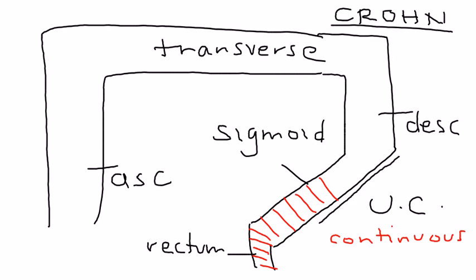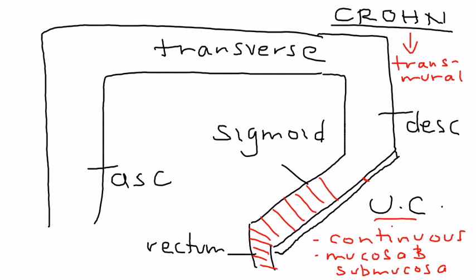Another key difference involves the bowel wall. In ulcerative colitis the inflammation is limited to the mucosa and submucosa, whereas in Crohn's disease it involves the full thickness of the wall - that's known as transmural inflammation. With ulcerative colitis, just superficial mucosal inflammation is the characteristic finding.